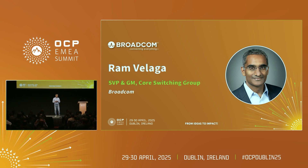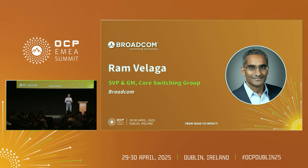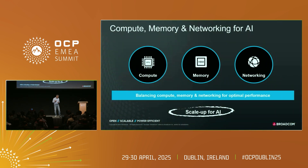Essentially, the amount of compute that's going to get deployed over the next few years is an order of magnitude larger than anything we have seen in the last couple of years. The gigawatts of power that's going to get deployed in the next couple of years is more than the entirety of power for data centers that has been deployed in the past. Machine learning and AI is a distributed computing system.